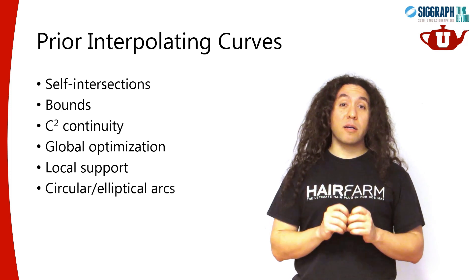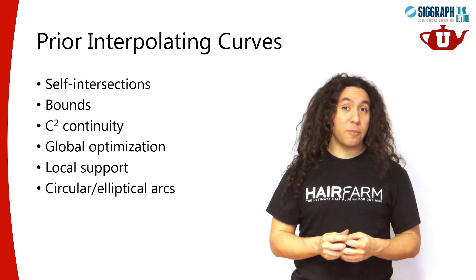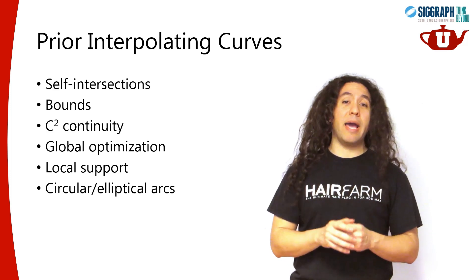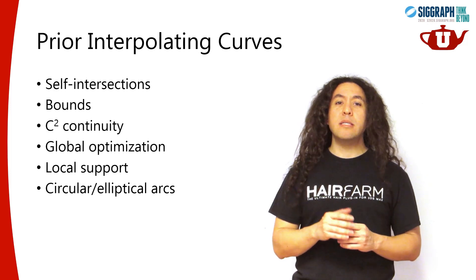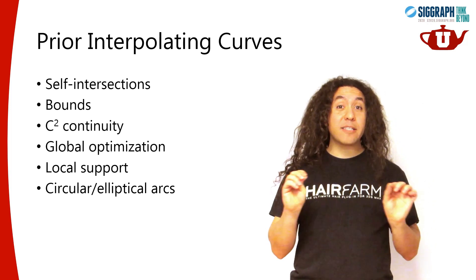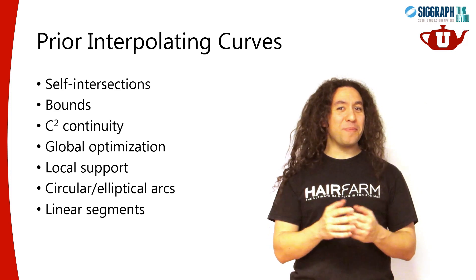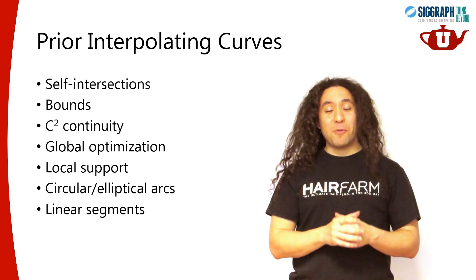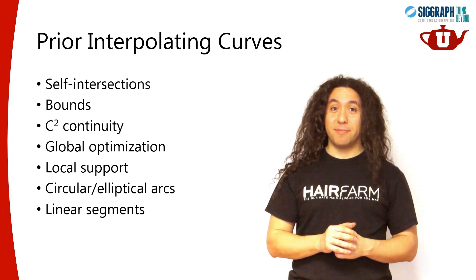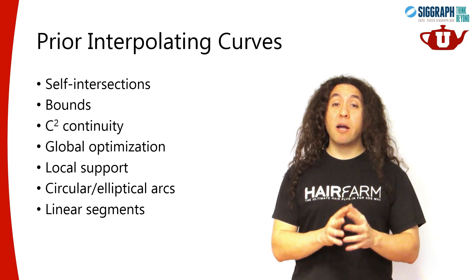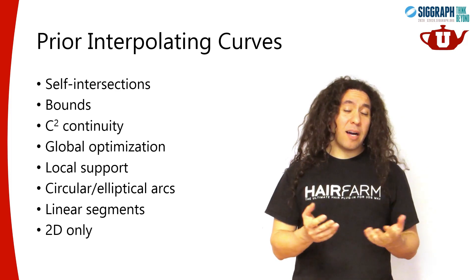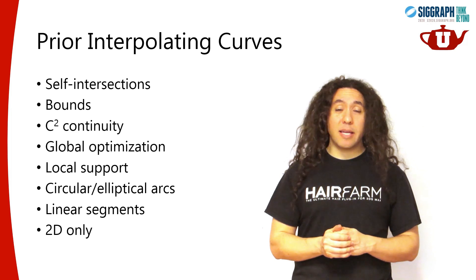Forming perfect circular and elliptical arcs is not possible with polynomial formulations. Rational polynomials can form circular and elliptical arcs, but by adding an extra control parameter, which is not very convenient. Forming linear segments can be a problem — when you have global numerical optimization, that can be a challenge. And finally, a lot of prior work on curves is limited to 2D only, and Kappa-Curves are no exception, and it's unclear if they can be extended to 3D.